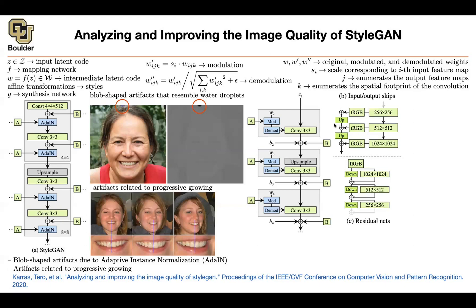There is also no need for progressive growing if you have skip connections at every single resolution. At lower resolution, you convert to RGB and keep them. At higher resolution, you convert to RGB and do a simple addition with the upsampled version of the previous layer. You have this shortcut connection everywhere, and if the network decides to take the shortcuts it will — we are not forcing it. You do the same with your discriminator going from higher resolution to lower resolution, always with a shortcut connection. So we got rid of progressive growing and adaptive instance normalization.